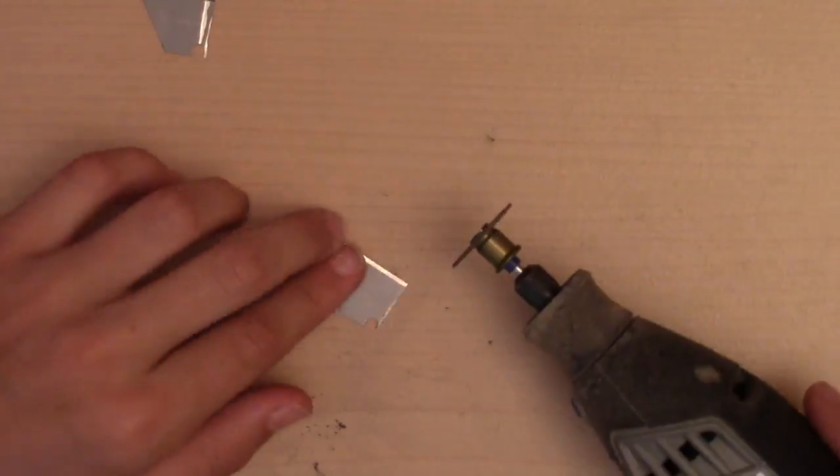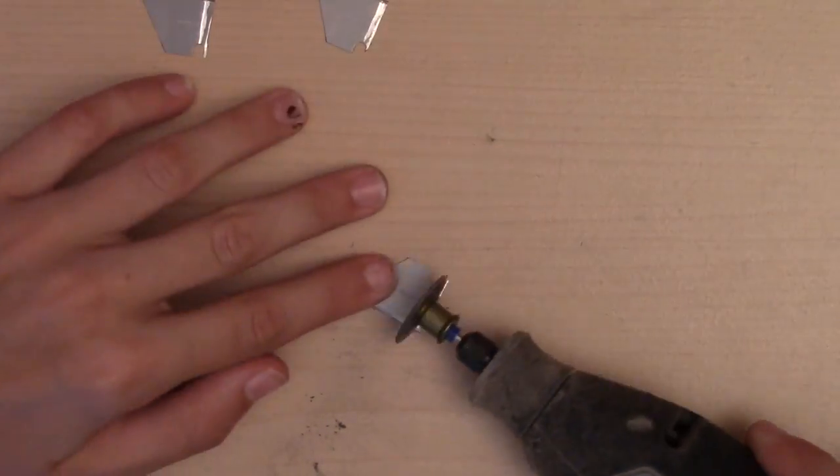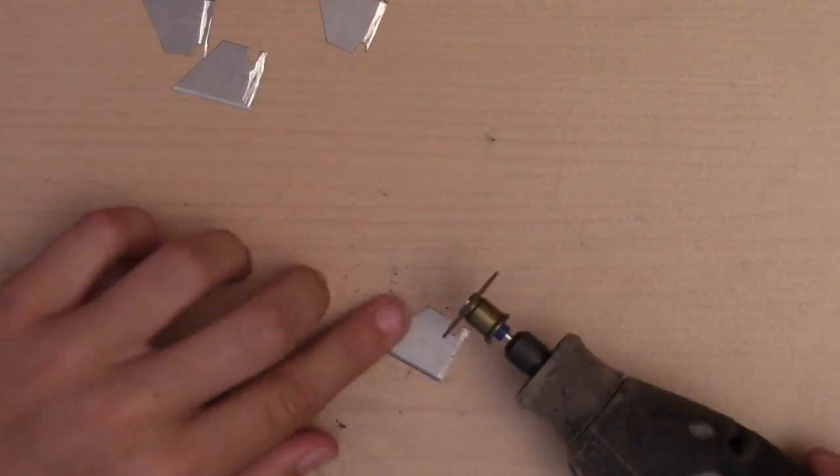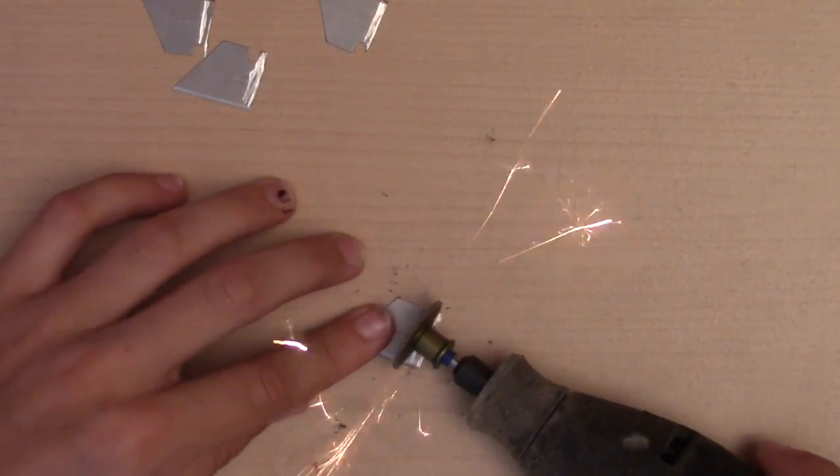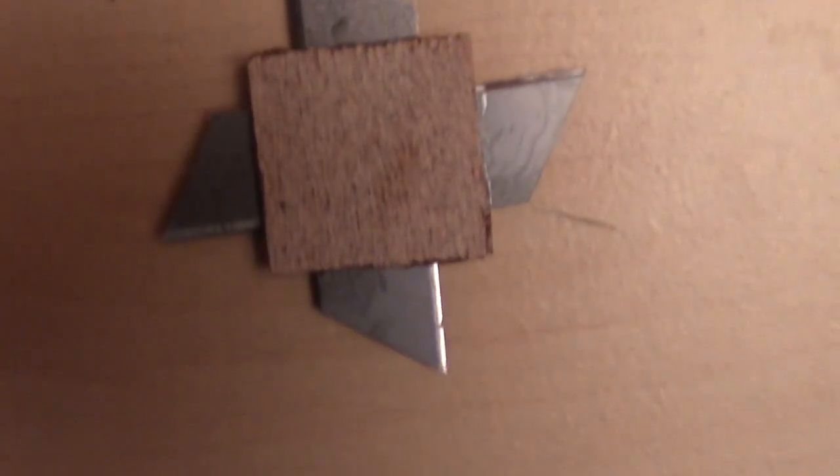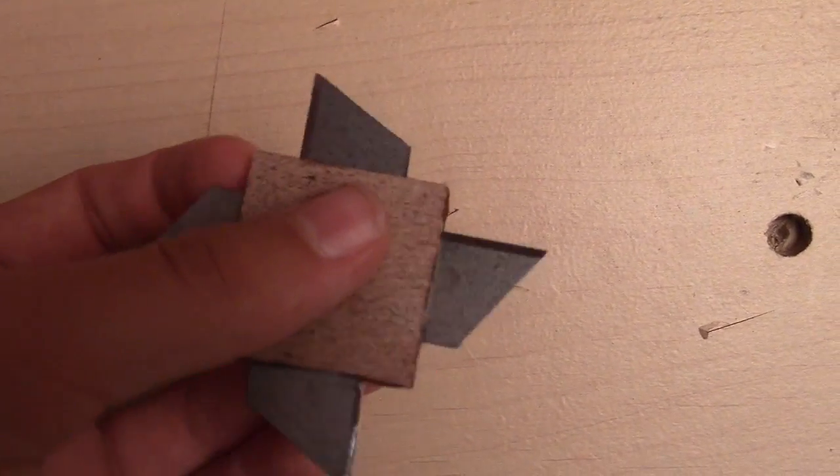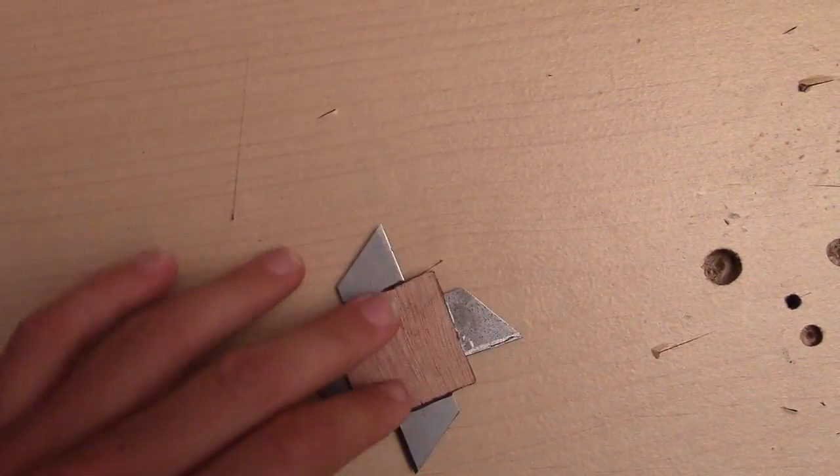Then I scored the bottom edge of each half with my dremel tool like so, for the epoxy to hang on better on the metal. So that's it - that's my second ninja star with pointy edges.